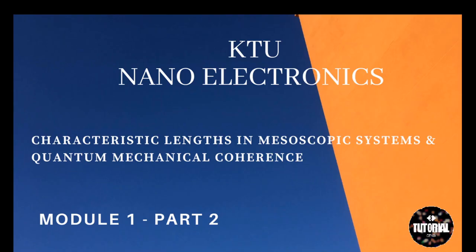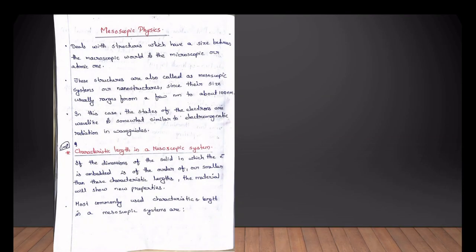Let's take a look at the first and second sections of nanoelectronics. The third section is mesoscopic physics and the characteristic length of the mesoscopic system.